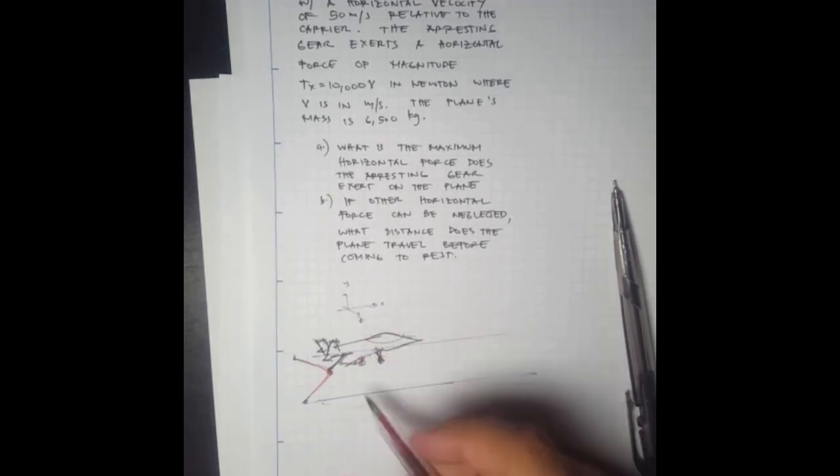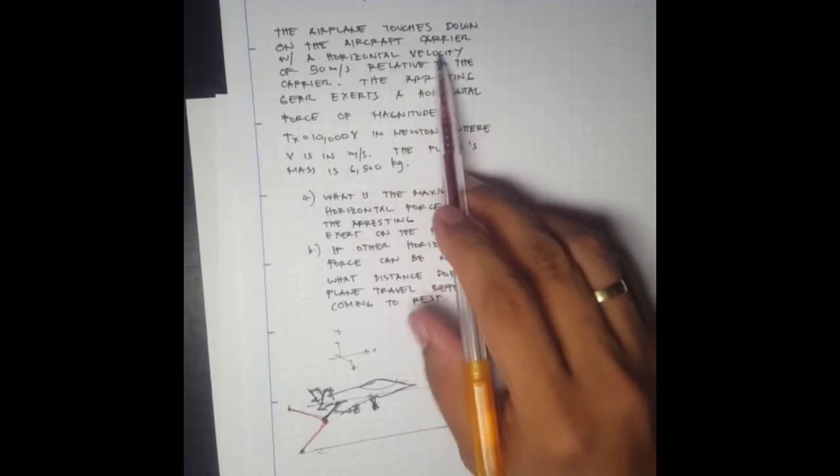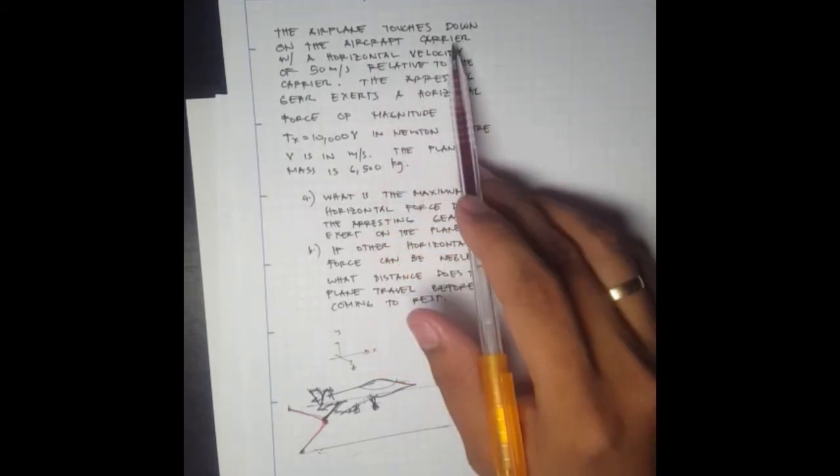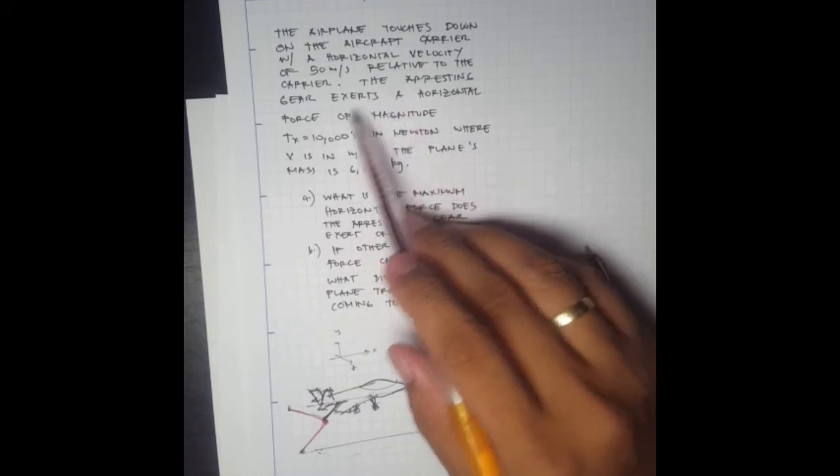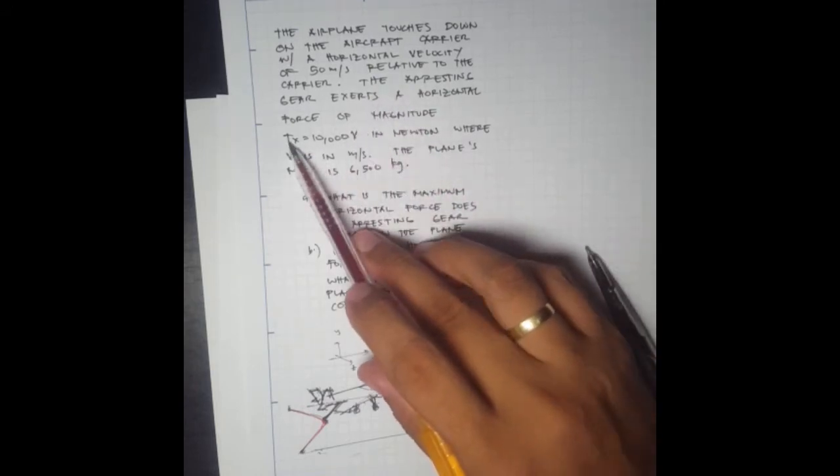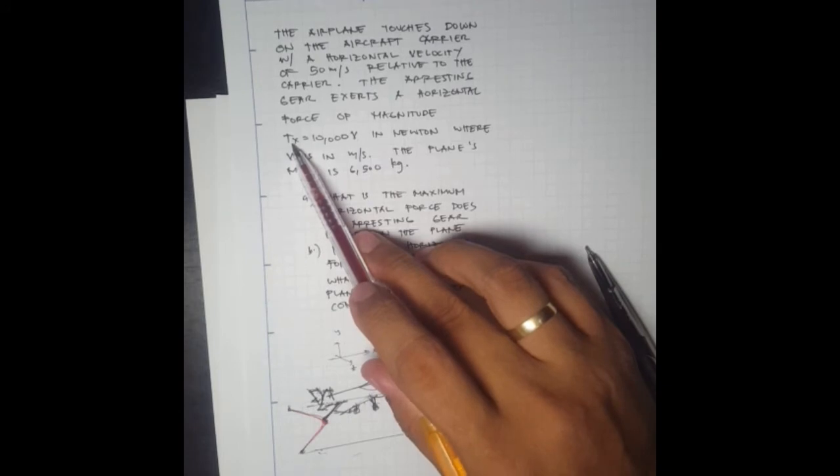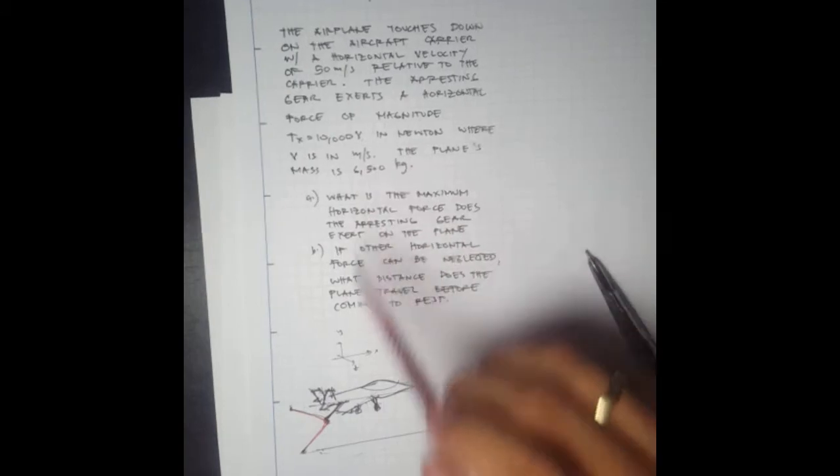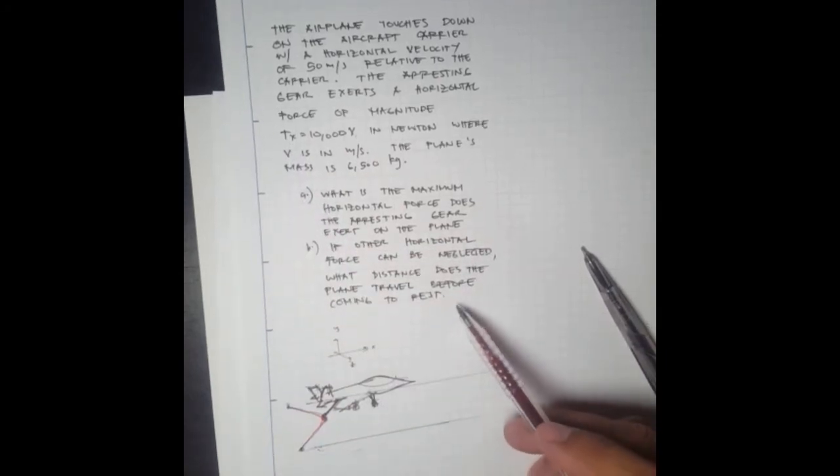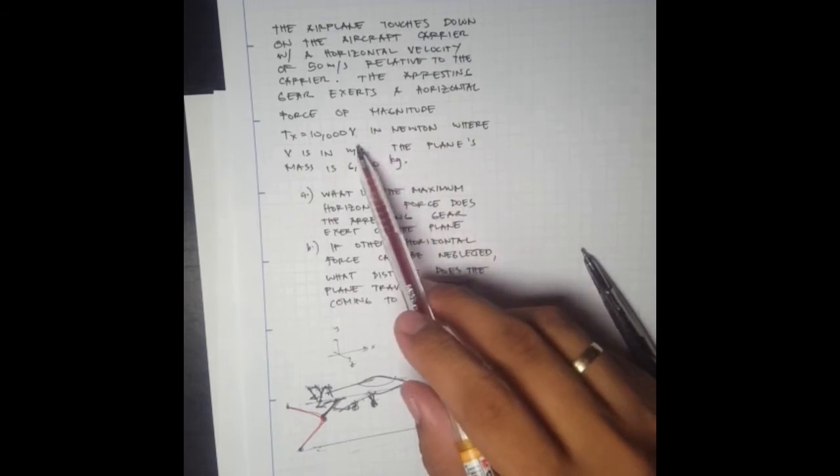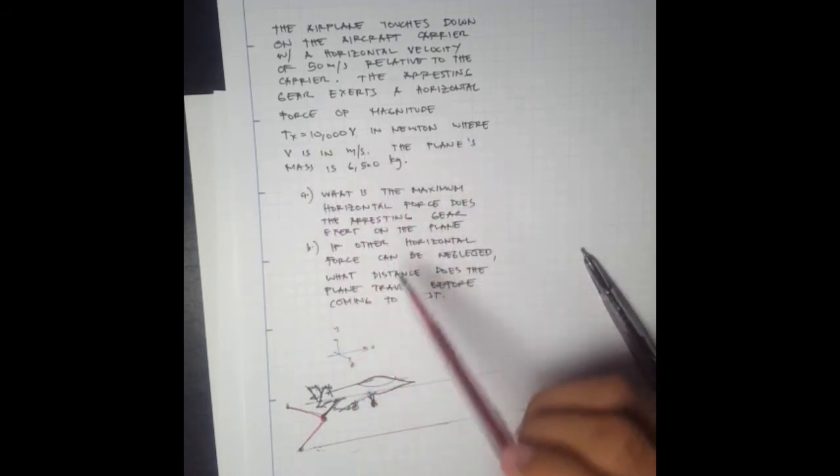The problem says that the airplane touches down on the aircraft carrier with a horizontal velocity of 50 meters per second relative to the carrier, and the arresting gear exerts a horizontal force of magnitude Tx equals 10,000 times velocity. So the tension force is directly proportional to the velocity of the plane.